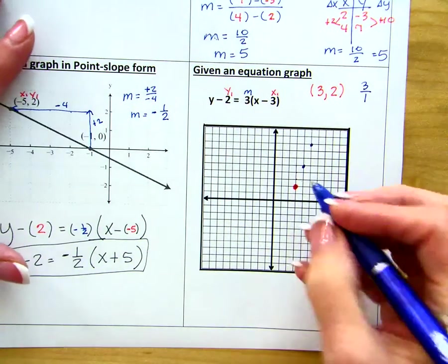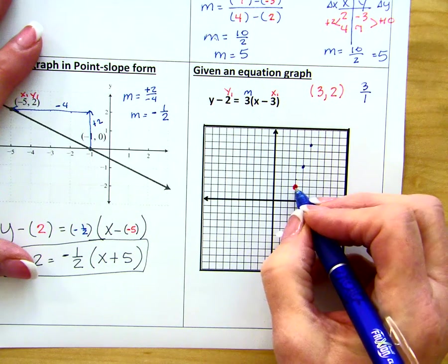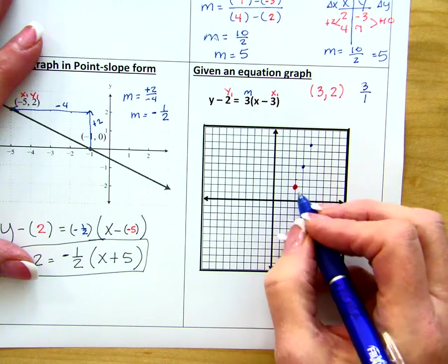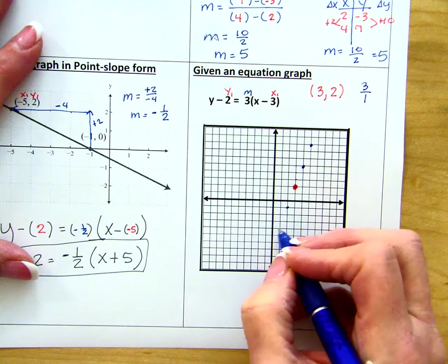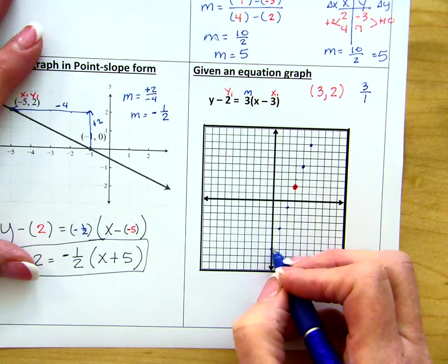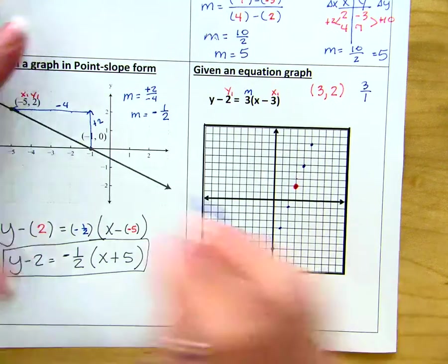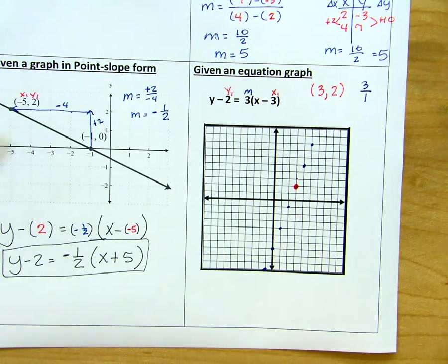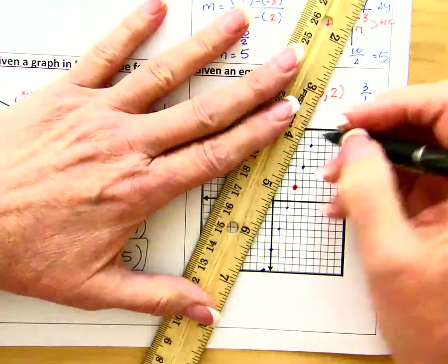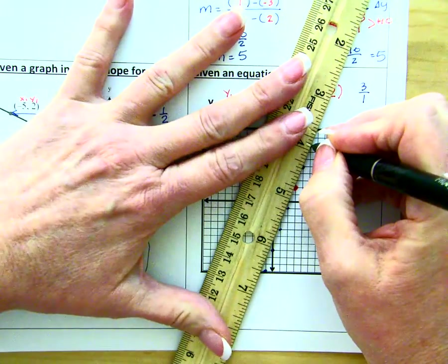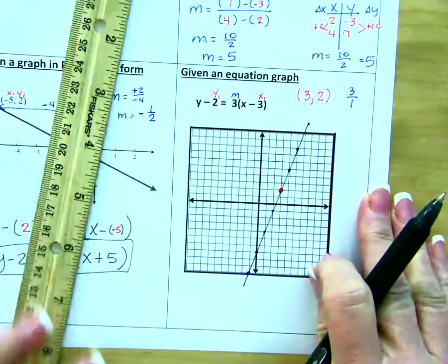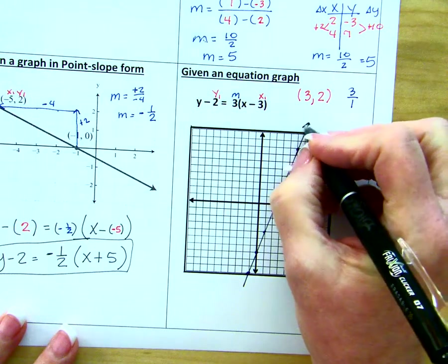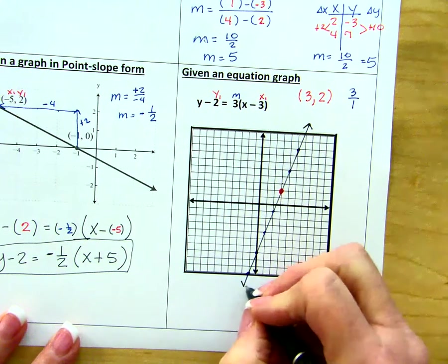So I'm going to go back the other way. Since I went up and right, I can now go down and back. Down and back, or down and left. Once I have all of those points plotted, then I can connect those points into a line. And in order for it to be a line and not a line segment, I have to put arrows on the end.